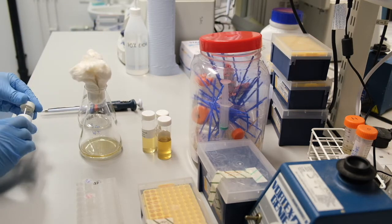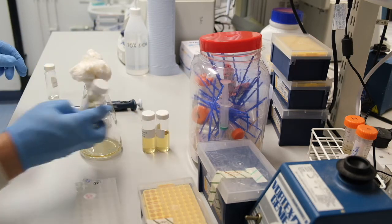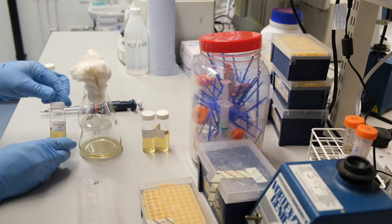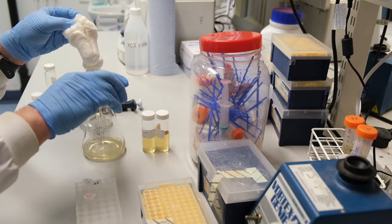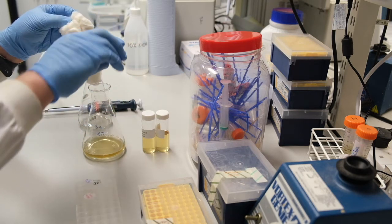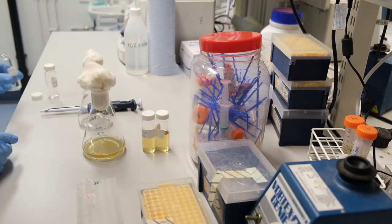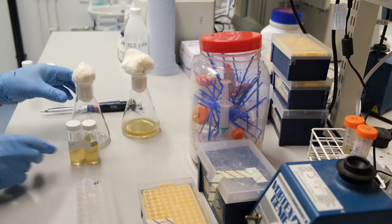A Bunsen burner could be used here to sterilize the rims of all glass vessels used, taking care not to set the cotton wool alight. As no Bunsen burner is available, I just work rapidly and avoid touching the rim of the flask or the bottles.